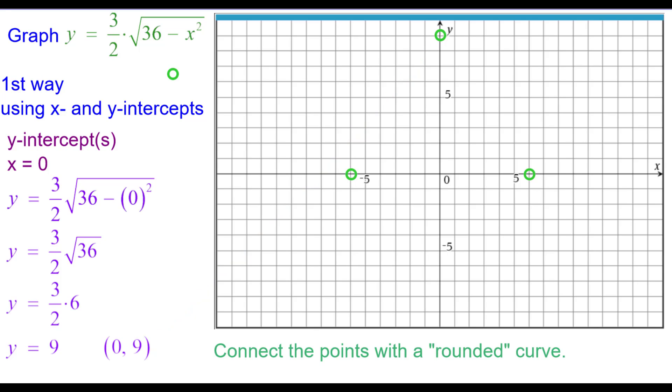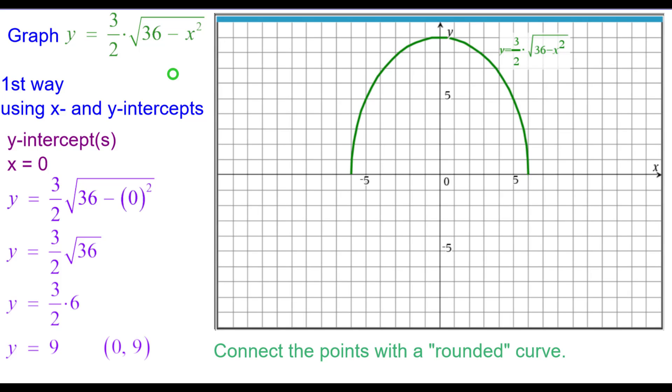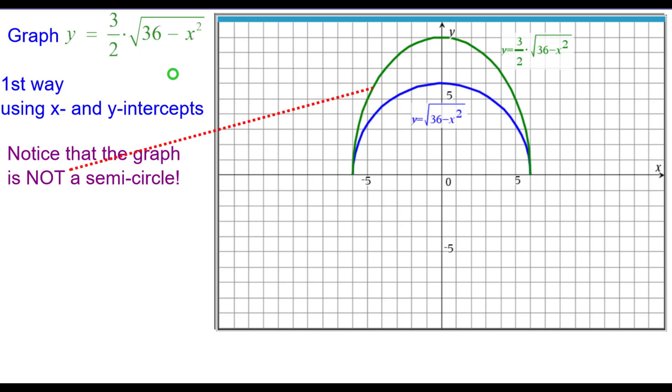We need to connect these points with a rounded curve because normally this is a semicircle. Notice it is not a semicircle, but comparing it to the parent graph you can see that the y values in blue are multiplied by 1.5 to get the y values in green on all points.